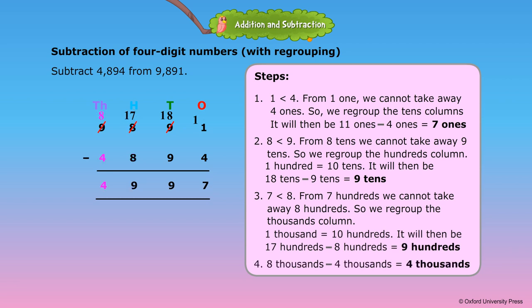Step 4: 8 thousands minus 4 thousands is equal to 4 thousands. Therefore, 9,891 minus 4,894 is equal to 4,997.